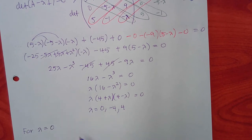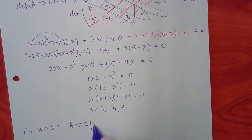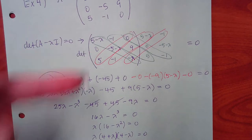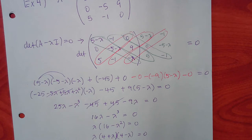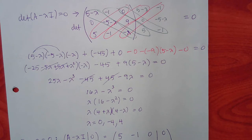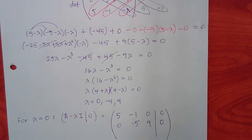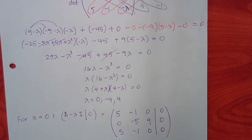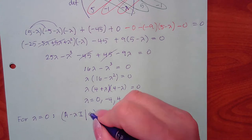For lambda equal to 0: plugging zero into the matrix with minus lambdas just gives back the original matrix, since 5 minus 0 is still 5, etc. Set up the augmented matrix with a column of zeros on the right.